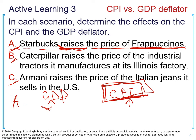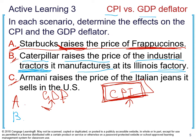For B, Caterpillar raises the price of industrial tractors produced at its Illinois facility. Is CPI or GDP deflator affected? GDP is affected because capital goods produced in the United States are included in GDP. But CPI is not affected because a typical consumer does not buy industrial tractors — it's not in the typical consumer basket.